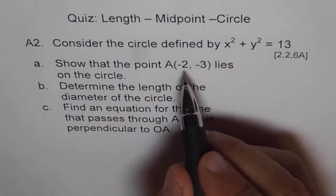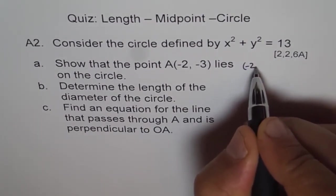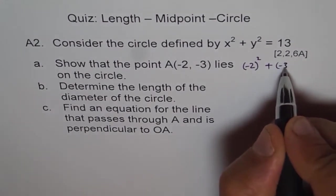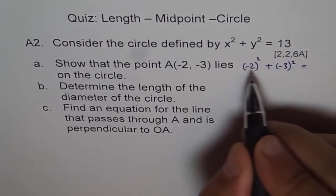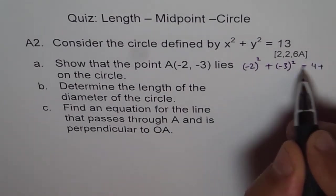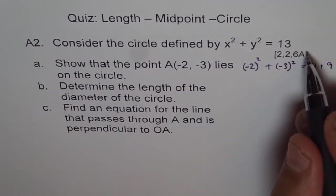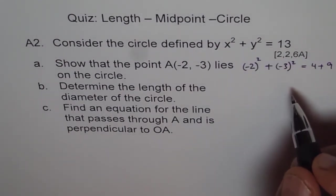Just plug it in. So when I write minus 2 square, we get basically minus 2 square plus minus 3 square equals to what? So this is minus 2 square is 4. 4 plus 9 equals to 13. Therefore, it satisfies the equation and therefore the point lies on the circle.